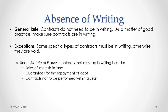The second type of contract under the Statute of Frauds is contracts for guarantees for the repayment of debt. This is where someone is guaranteeing someone else's debt. For example, if you apply for a loan from the bank and the bank won't lend you money unless someone else provides a guarantee, your mom could provide that guarantee. If you fail to pay back the loan, the bank can turn to your mom and make her liable under the guarantee. That guarantee contract between the bank and your mom has to be in writing.